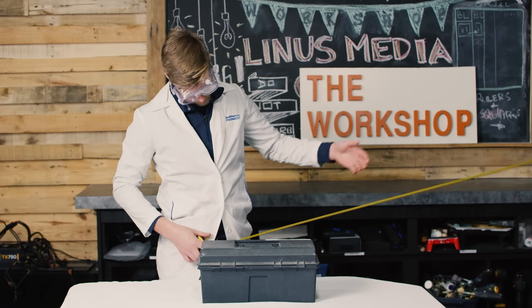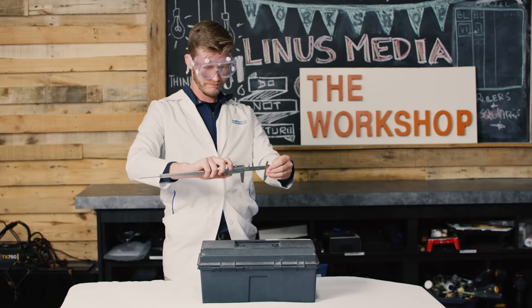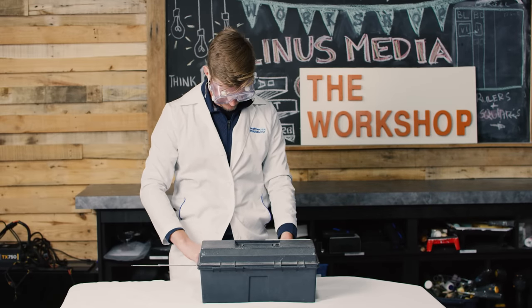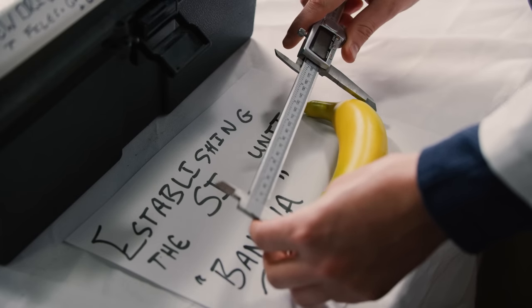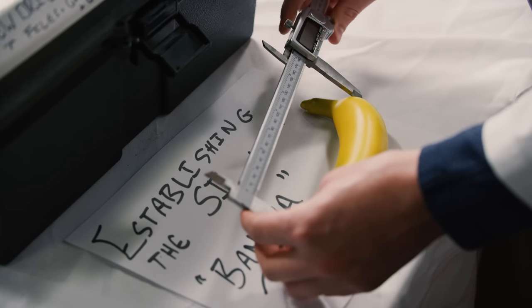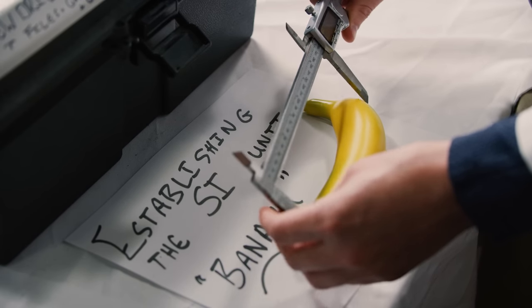How do you measure something that's really, really small? Well, first you might try a measuring tape, then calipers, and if you've got a big budget, you might treat yourself to a scanning electron microscope. But there is one very clear problem with all of those solutions: they're too small, and they don't use lasers.